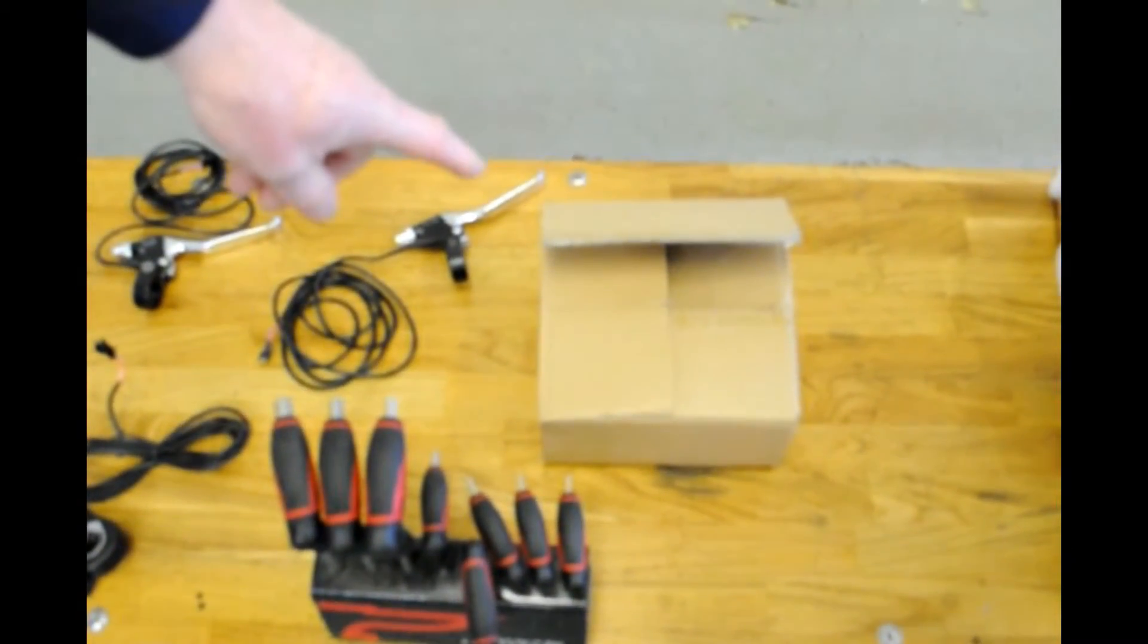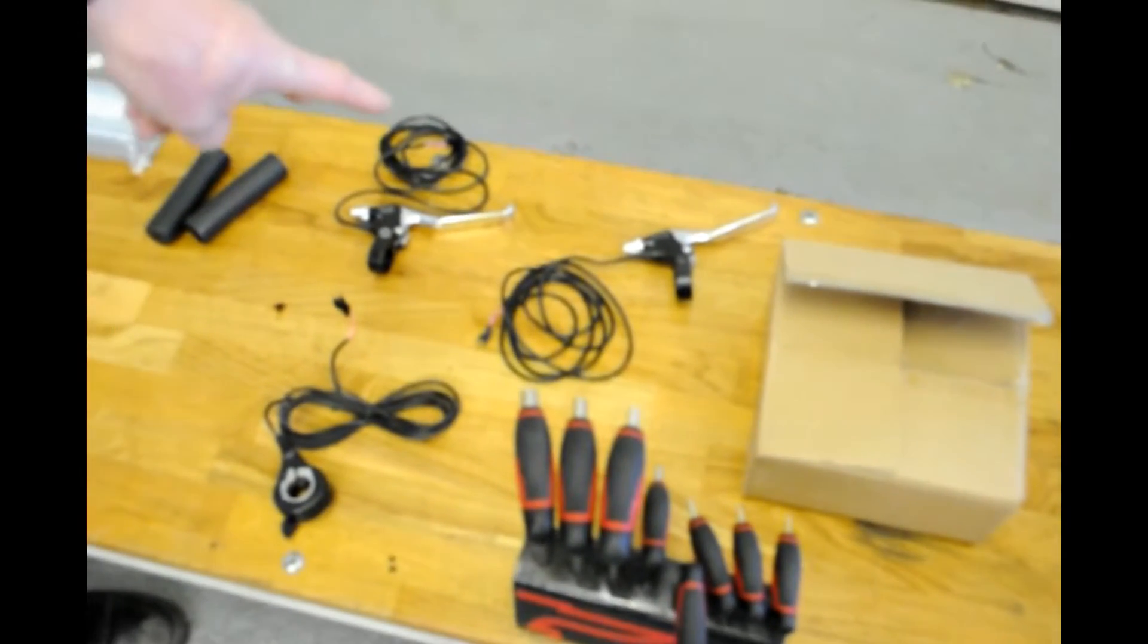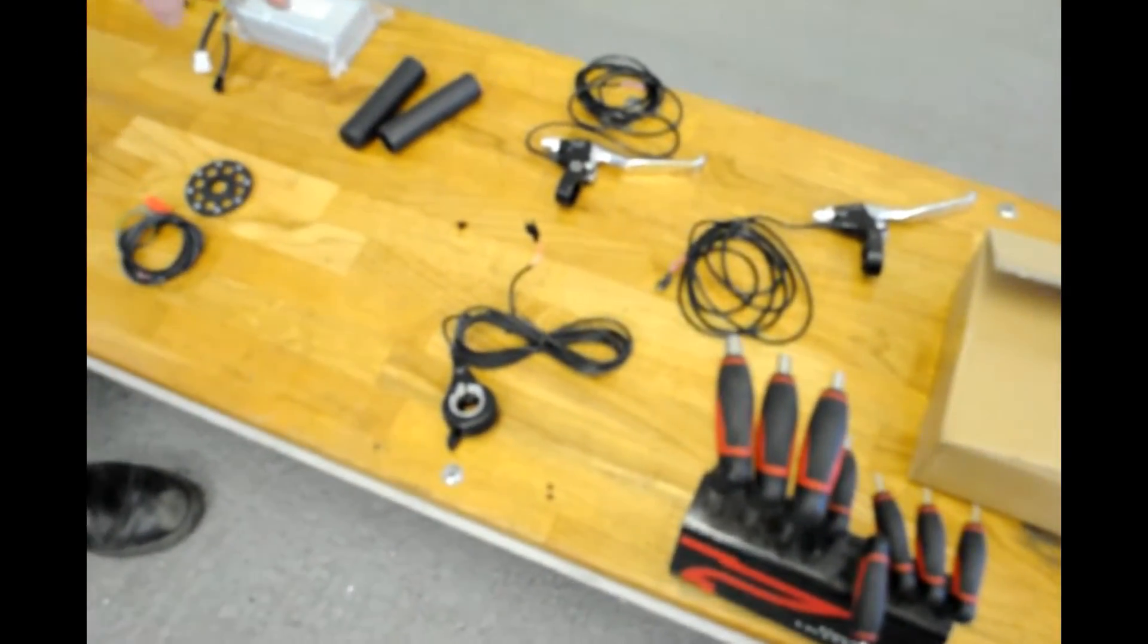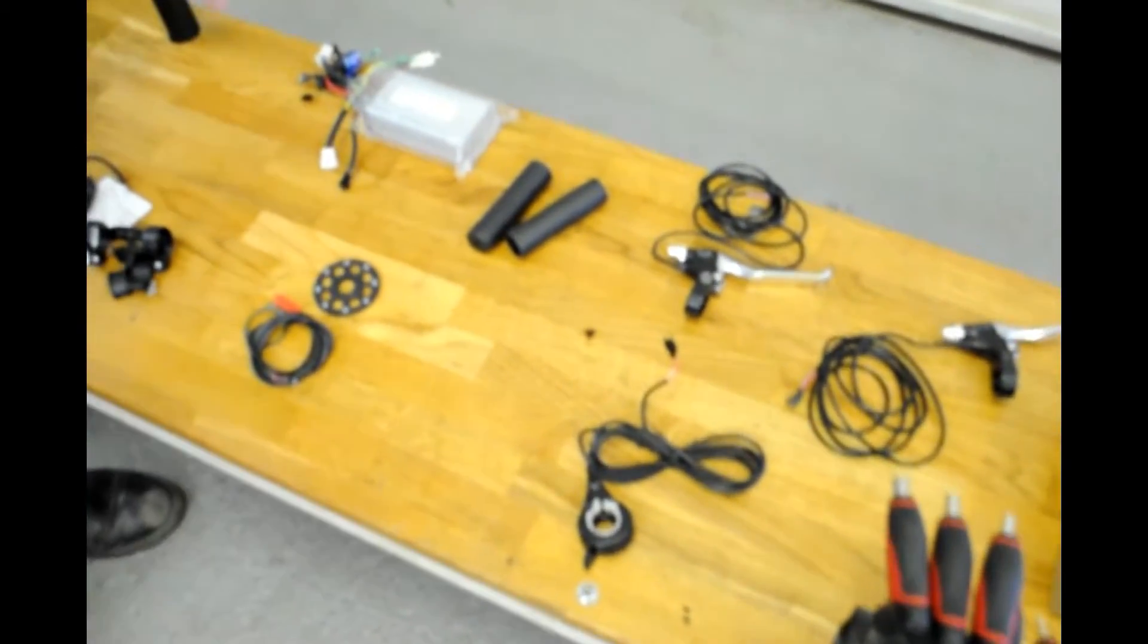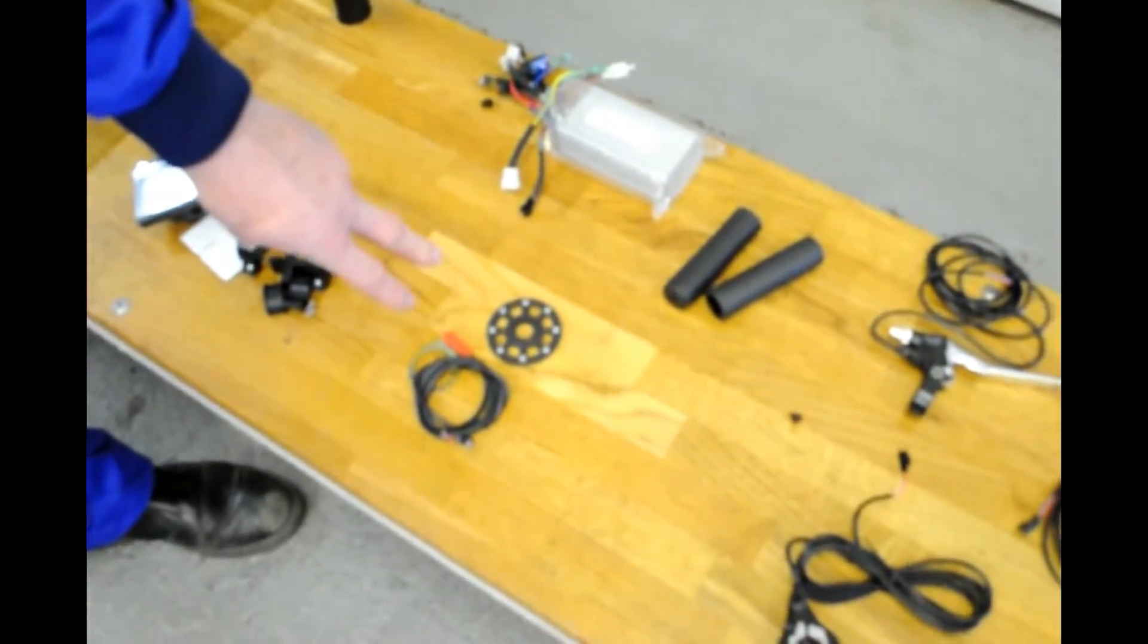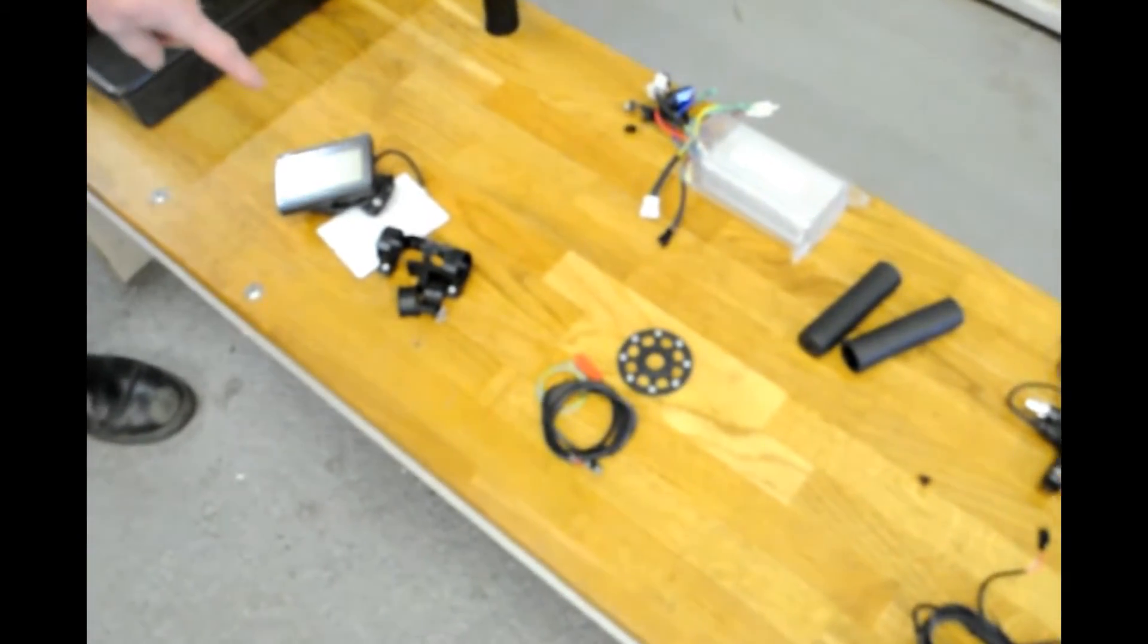Inside the box you will receive the following components: two brake levers, one thumb throttle, two hand grips, one ECU, two components for the pedal elect and a display.